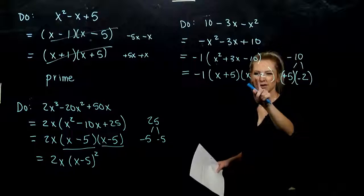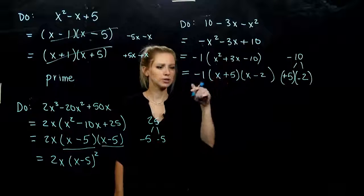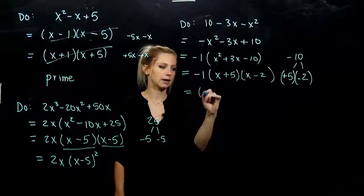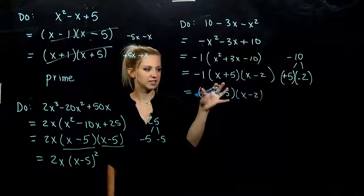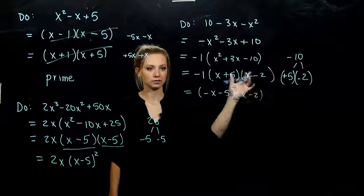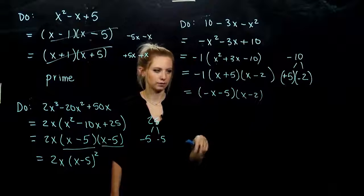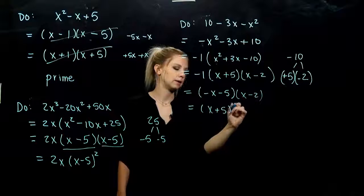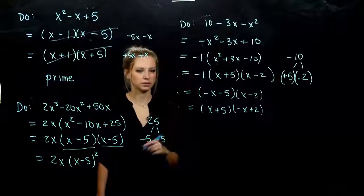A few other ways that we could write this, though. Instead of having the negative hanging out on the front, we could distribute it in. So if I give it to this first term, then I'm looking at negative x minus 5 times x minus 2. I kind of attach it or distribute it into my first term. But we don't have to give it everywhere, because a negative times a negative is a positive, and we don't want to change it.